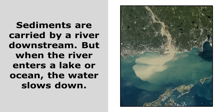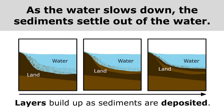Sediments are carried by a river downstream, but when the river enters a lake or ocean, the water slows down. As the water slows down, the sediments settle out of the water. That fast-moving water is easily able to carry those sediments and push them downstream, but once it slows down, all those sediments start to settle out to the bottom of the lake or ocean. Over time, the layers build up as sediments are deposited. This deposition of sediments over time builds up layers.